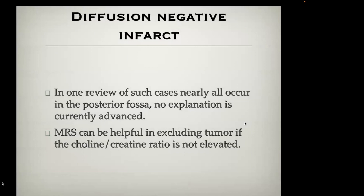Not all acute infarcts will show restricted diffusion — this is unusual and I don't see it often, but be aware so you don't discount the possibility of an infarct when the diffusion scan is not typical. In one review, nearly all such cases occurred in the posterior fossa. There's no clear explanation, though it may have to do with properties of the posterior fossa given the surrounding bone.